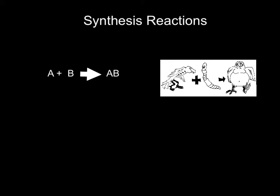The first type of reaction we're going to talk about is a synthesis reaction. A synthesis reaction is when you have two reactants — remember the reactants are on the left side of the arrow — and they join together to make one product. That's what synthesis means: joining together. So when you see synthesis, you're thinking about joining together.